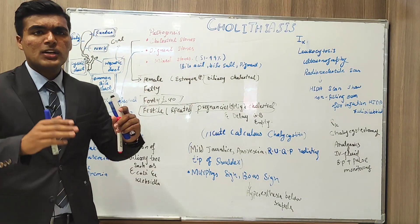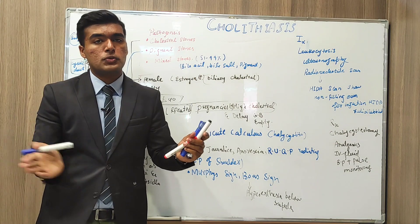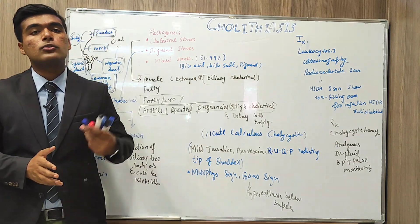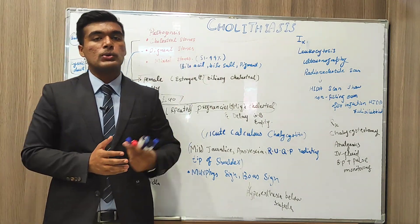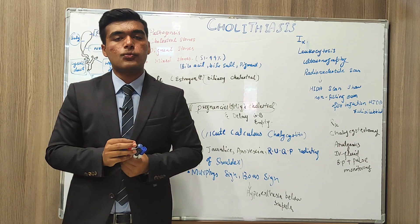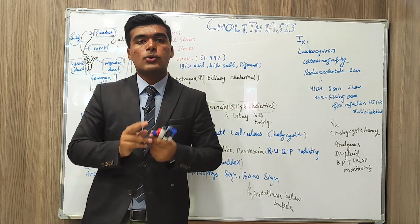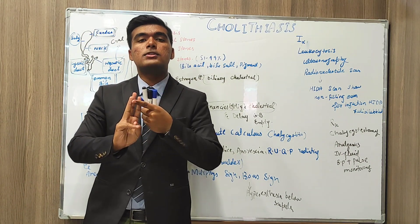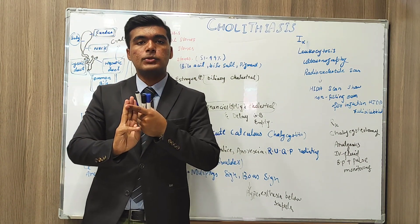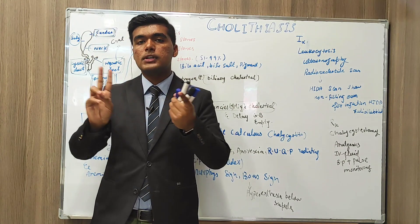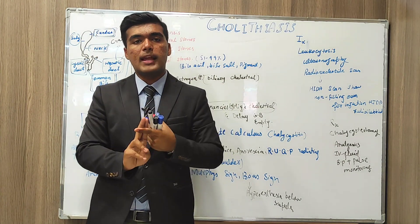After discussing the quick overview of anatomy and physiology, we move towards pathology. We have three forms of gallstones: cholesterol stones, mixed stones, and pigment stones. Pigment stones are further divided into brown and black pigment types.